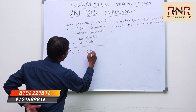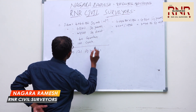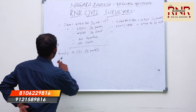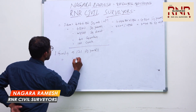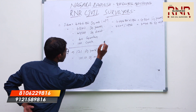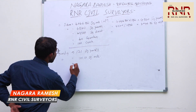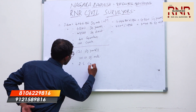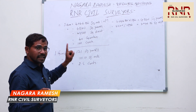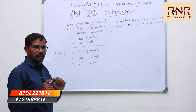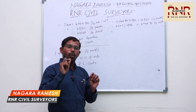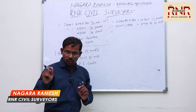121 square yards is equal to 1 gunta. One gunta is equal to 121 square yards. One gunta is equal to 101.17 square meters. One gunta equals 2.5 cents. One acre equals 40 guntas and 100 cents.